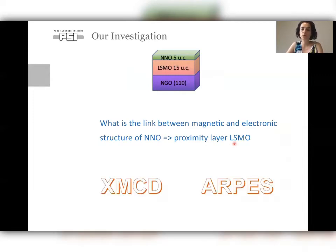For that, we're going to use two synchrotron-based techniques. One is XMCD to probe the magnetic moment of the nickelate and of the manganite layers separately. And the other is to study the Fermi surface electronic structure of the NNO in proximity to LSMO, so we will use ARPES for that.